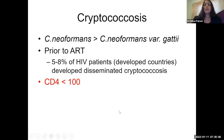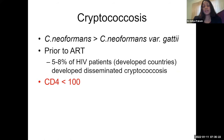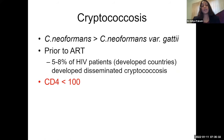Cryptococcus neoformans is what we see in clinical practice, although we also see Cryptococcus neoformans variant gattii in immunocompetent patients. Prior to ART, up to 8% of HIV patients developed disseminated cryptococcosis, and like toxoplasmosis, the cutoff is a CD4 count of less than 100.